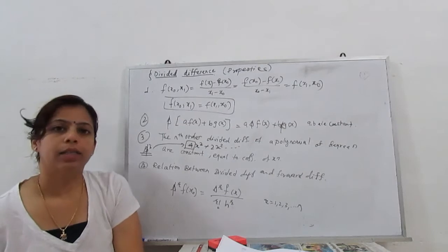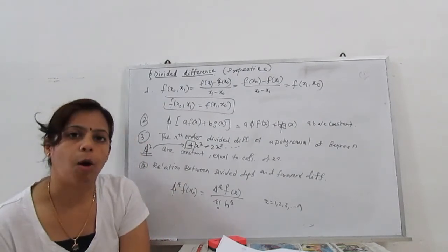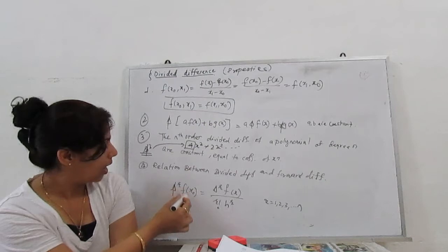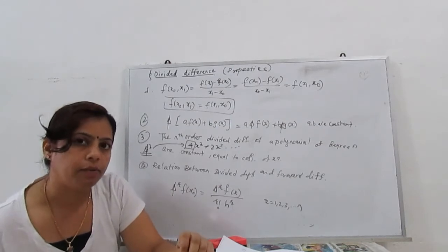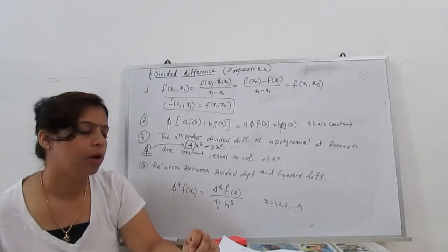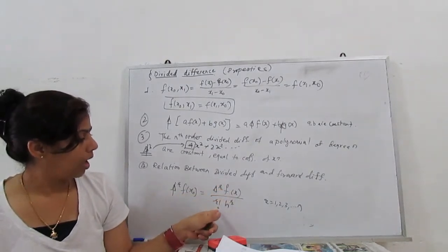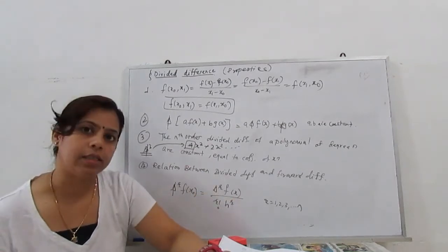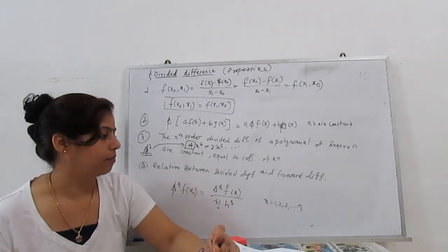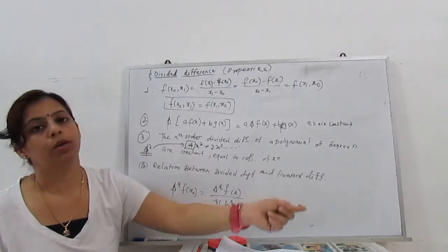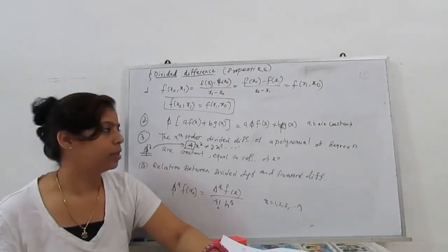Next I will show the relation between divided differences and the forward difference operator. The r-th order divided difference δ^r f(x0) is related to the simple forward operator by: δ^r f(x0) = Δ^r f(x0) / (r! · h^r), where h is the equal spacing used in the forward difference table, and r goes from 1, 2, 3 to n. This is the general relation between the divided difference and the forward difference operator.